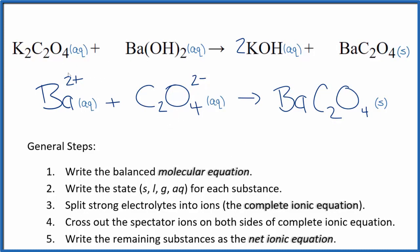So this is the balanced net ionic equation for potassium oxalate and barium hydroxide. You'll note the charge is conserved. We have a 2 plus and a 2 minus. That adds up to zero. Over here, we have a neutral compound net charge of zero. Charge is conserved. If you count the atoms up, they're balanced too.